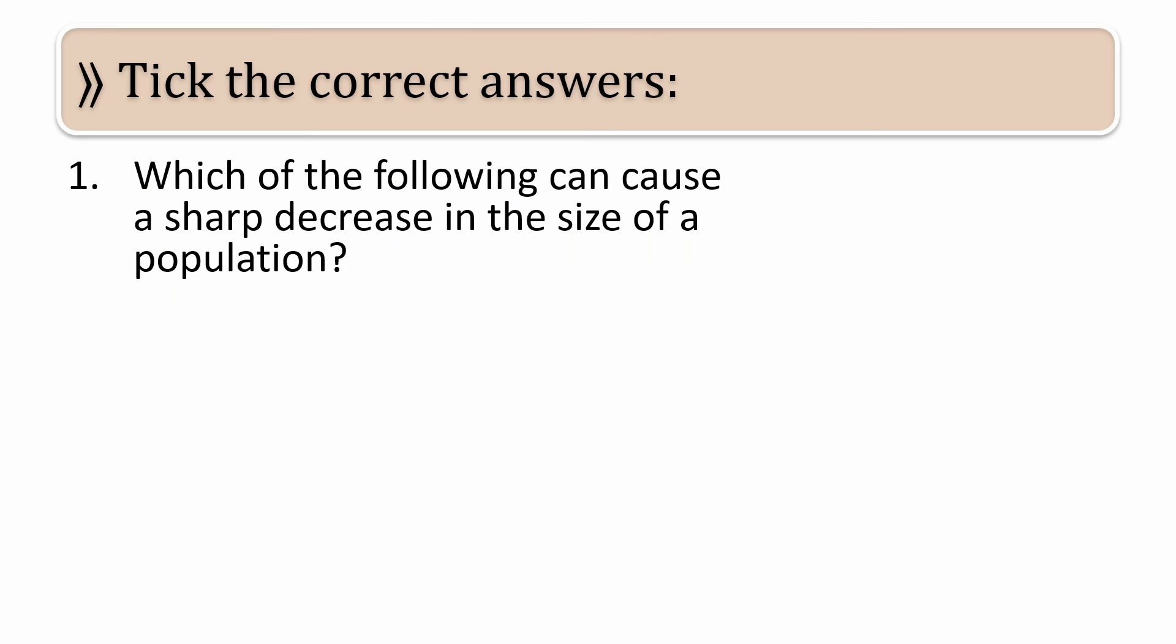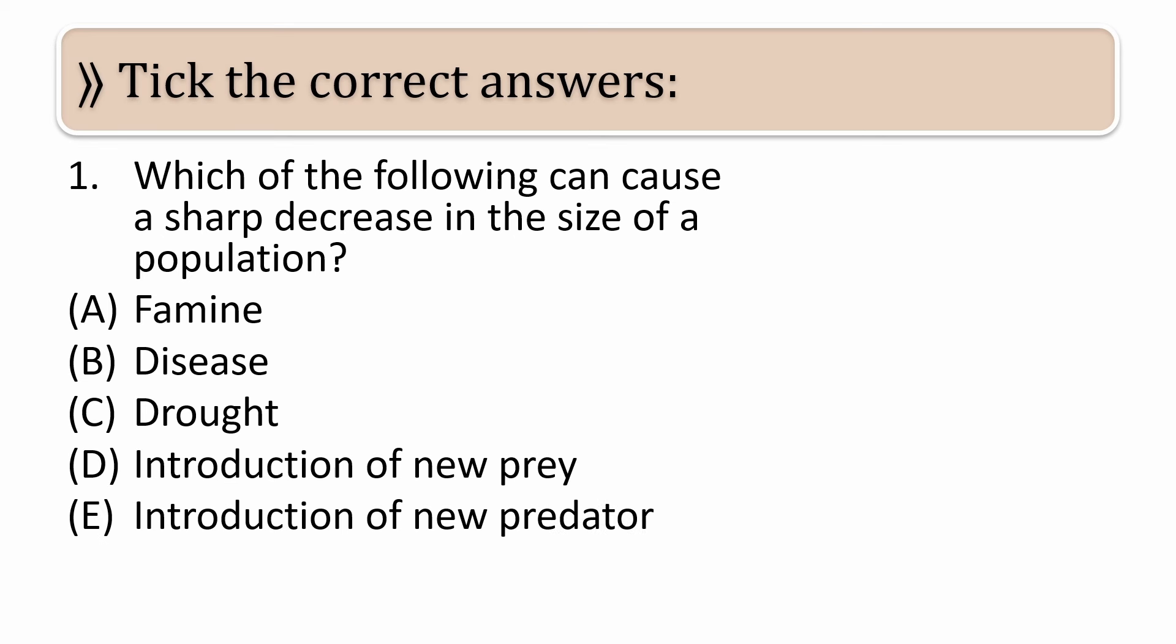First question: Which of the following can cause a sharp decrease in the size of population? Option A is famine, option B is disease, option C is drought, option D is introduction of new prey, and option E is introduction of new predator.